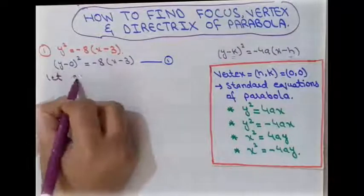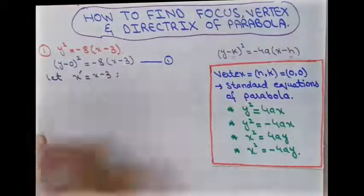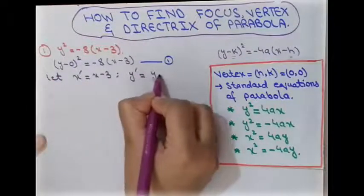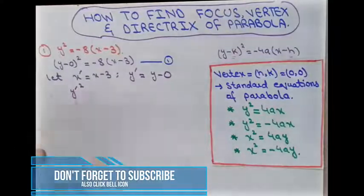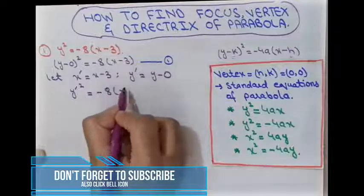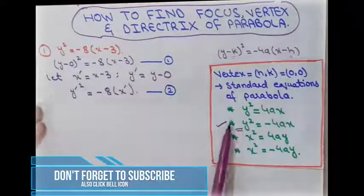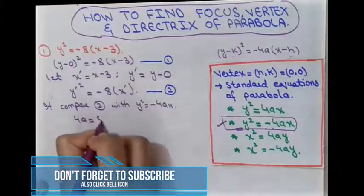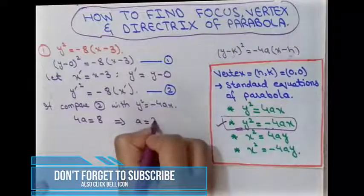We let x′ = x − 3 and y′ = y − 0. Then the first equation becomes y′² = −8x′. This is our second equation. Comparing with the standard form, 4a = 8, so a = 2.